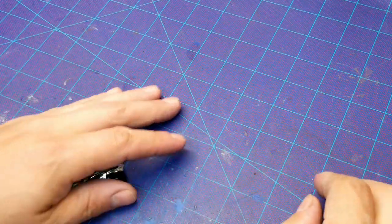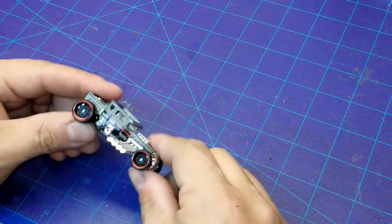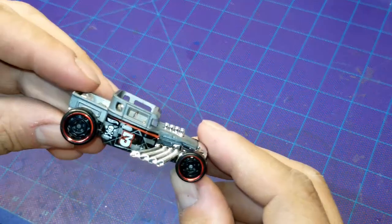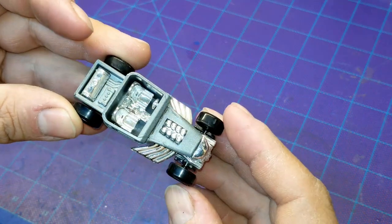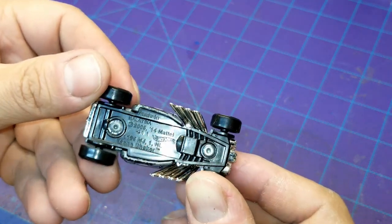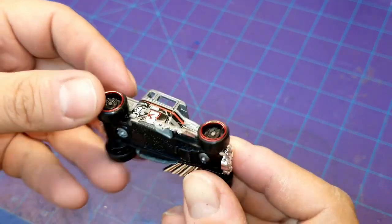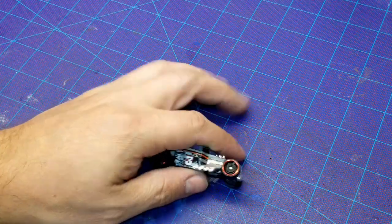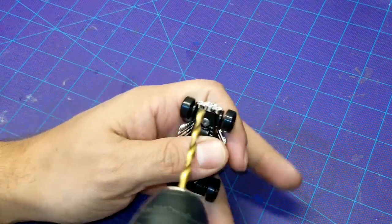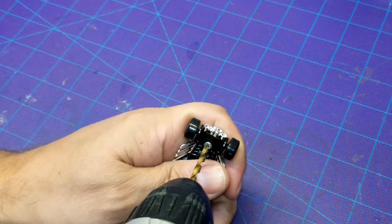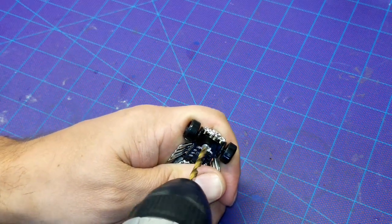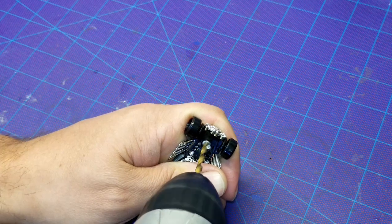All right everybody, welcome back to Orange Track Outlaws. Today we are going to do the Three Blind Mice Bad to the Bone Bone Shaker custom. Here is a look at what we're going to start with - pretty basic Bone Shaker here, nothing too fancy. We're gonna get this bad boy drilled apart.